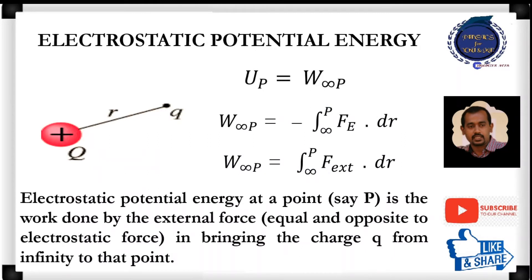Now, what is the definition of electrostatic potential energy? Electrostatic potential energy at a point, say P, is the work done by the external force in bringing the test charge Q from infinity to that point. We know that when a test charge is placed at an infinite distance from the source charge Q, the electrostatic field at infinity will be equal to zero. Hence the test charge will not experience any electrostatic force at infinity. Therefore, the work done in moving a charge at infinite distance will be equal to zero.